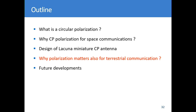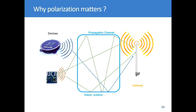We also studied whether this antenna can be used for terrestrial communications. When doing communication on Earth, most of the time you will not have just a line-of-sight path — you will experience a lot of multipath between the transmitter and the receiver.